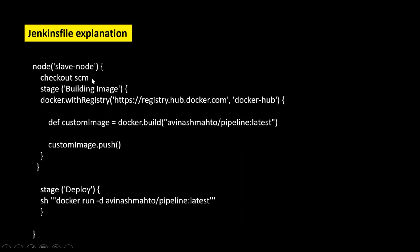Then the next step is 'checkout SCM'. Basically, whenever you want to check out the update from source code management you need to define this section. After that I have defined the first stage called 'building image', and under this I am using the official syntax given on the Jenkins website. It says 'docker.withRegistry' with the address of the Docker Hub registry and the credentials ID 'docker-hub', which is the ID of my Docker Hub credentials defined inside Jenkins — I will show you later in this tutorial.